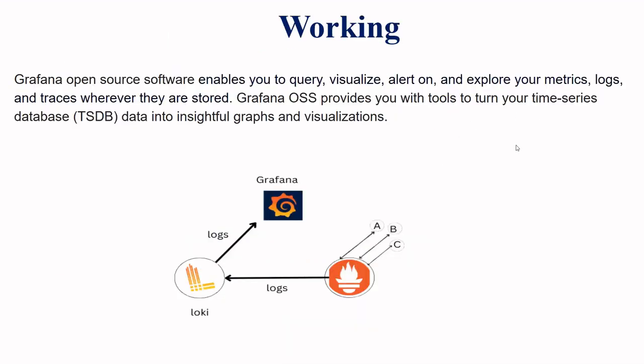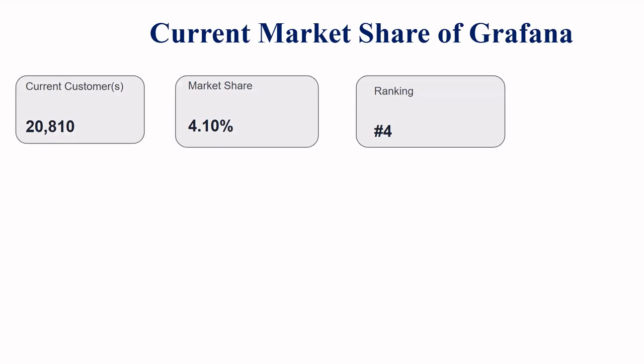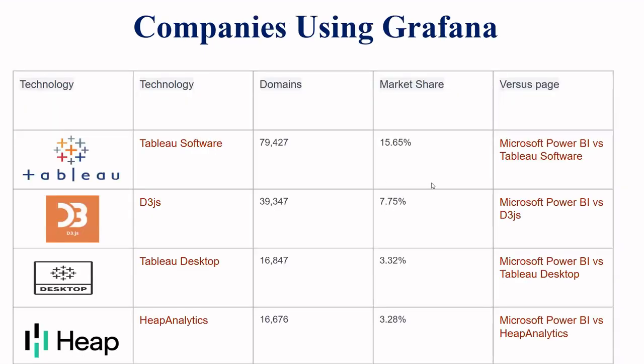Next is the working of Grafana. Grafana is open source software that enables you to query, visualize, and set alerts on, and explore metrics, logs, and traces wherever they are stored. It provides tools to turn time series database data into insightful graphs and visualizations. The current customer count of Grafana is 2,810, the current market share is 4.10 percent, and its ranking is 4.